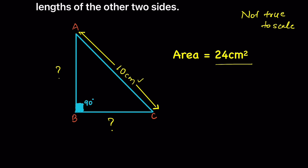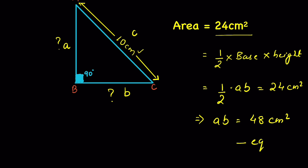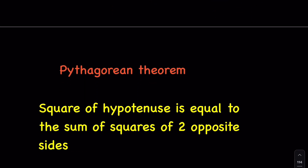In the right angle triangle, the area of a triangle is half times base times height. If we consider BC as lowercase b, AB as lowercase a, and AC as lowercase c, then area equals (1/2) × a × b = 24 cm². From here we get a×b = 48 cm². Let this be equation 1. Now in a right angle triangle, as per the Pythagorean theorem...